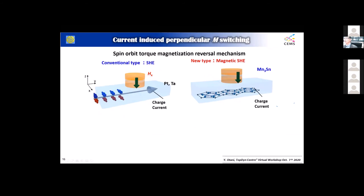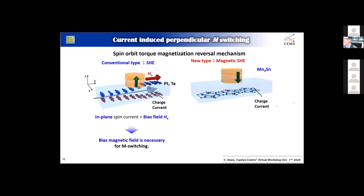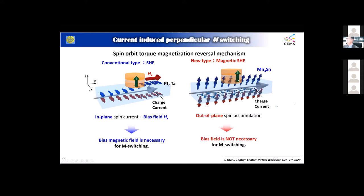The out-of-plane component is very beneficial from an application perspective. If you try to use an ordinary spin Hall effect with a perpendicular anisotropy magnet — whose magnetization stays exactly perpendicular — you cannot switch it even when you apply spin-orbit torque. You always need a bias field to tilt the magnetization a little bit to break the symmetry. But with this novel magnetic spin Hall effect, the spin accumulation vector already has an out-of-plane and slightly tilted component, so that the spin-orbit torque can effectively switch the magnetization of a ferromagnet with perpendicular anisotropy.